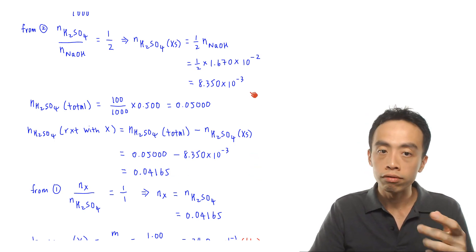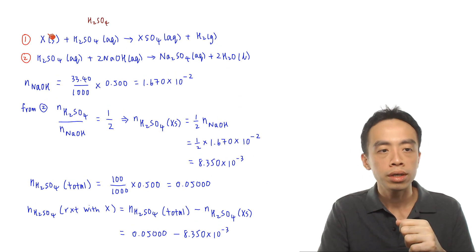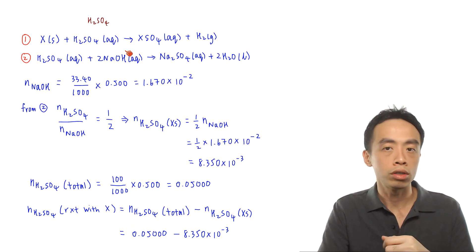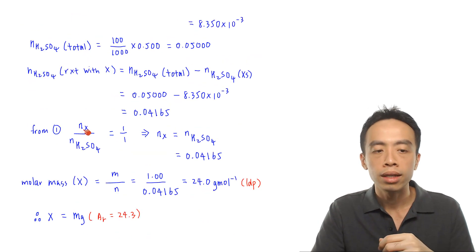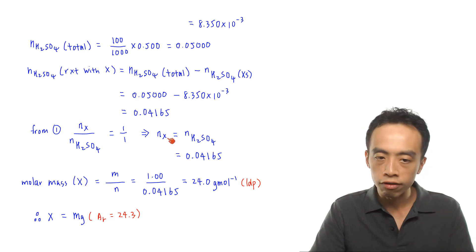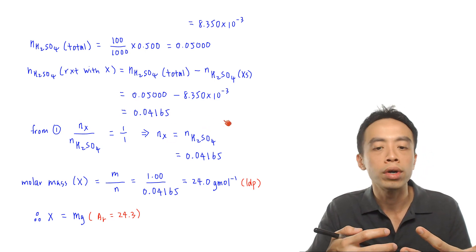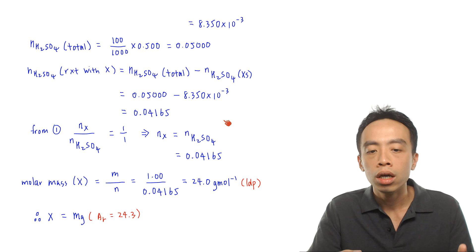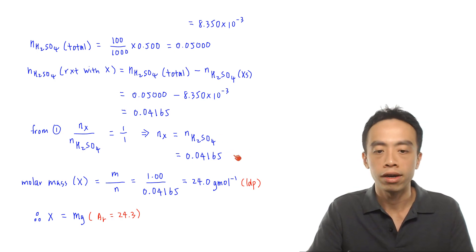Using the mole ratio from the first equation, the ratio of X to H₂SO₄ is 1:1. Therefore, the moles of X equals the moles of H₂SO₄ that reacted with it, which is 0.04165 mol.